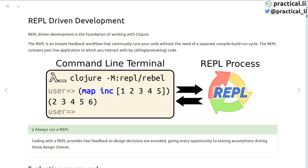REPL-driven development is the foundation to working successfully with Clojure. The REPL is an instant feedback workflow that continually runs your code. The REPL contains a live application to interact with. When developing Clojure, the first step is to start the REPL process, then write a Clojure expression and send it to the REPL. The REPL then reads that expression and evaluates it, returning the result and giving instant feedback.